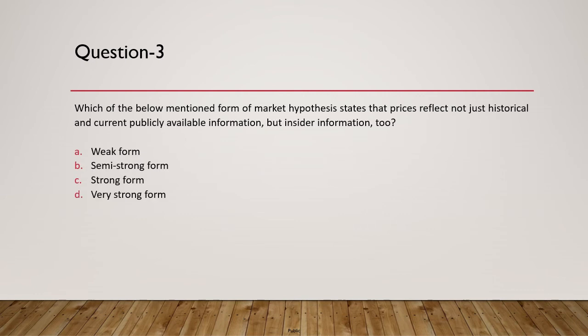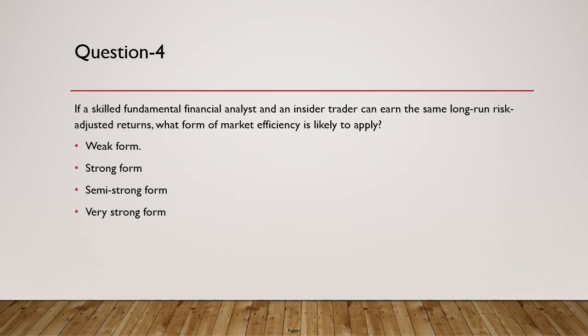Question 3: Which form of market hypothesis states that prices reflect not just historical and publicly available information but also insider information? This is the strong form of market efficiency. The answer is C.